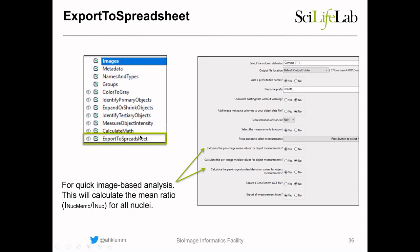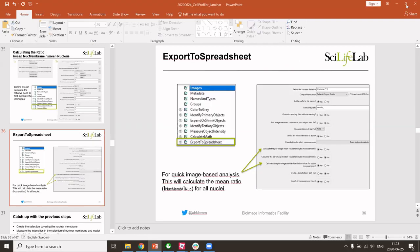Now we have measured everything. But of course we want access to those measurements, so we need to tell CellProfiler to export them to a spreadsheet — a CSV file. We use the Export to Spreadsheet module for this.